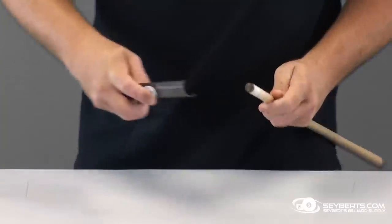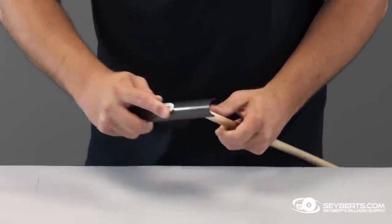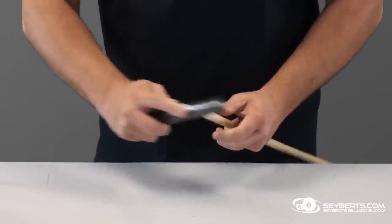Well, there we got the tip on and everything set, the sides are burnished. Final touch - just shape your tip to the shape that you want. A lot of people use a dime, a lot of people use a nickel. We prefer the dime around here.